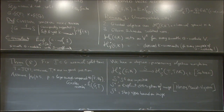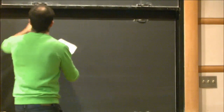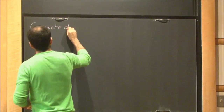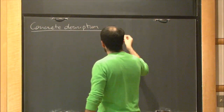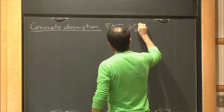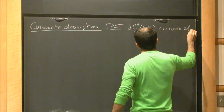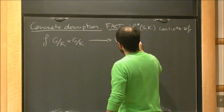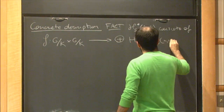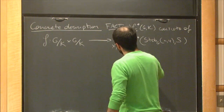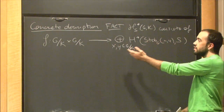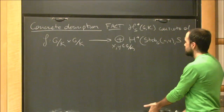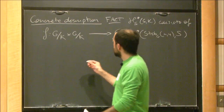Now that I gave the definition and described the theorem, I want to give a more concrete description of this algebra. I'm going to state it as a fact: H_S(G, K) consists of functions from pairs of points in G/K into the direct sum of the cohomology of a specific class of groups. For every pair of points x, y in G/K, we can form the stabilizer under the diagonal G-action — this is an intersection of two conjugates of K, in particular of finite index in each of the two. We take the cohomology of this as a profinite group with S-coefficients.